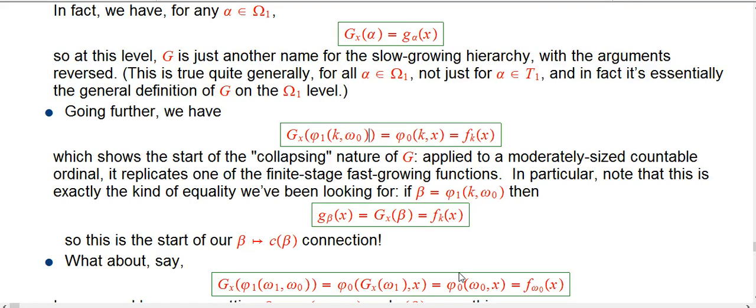We've got a moderately sized countable ordinal. If k is like 2, 3, 4, 5, 6, 7, these are getting pretty interesting. They get passed like epsilon naught in terms of ordinal height.